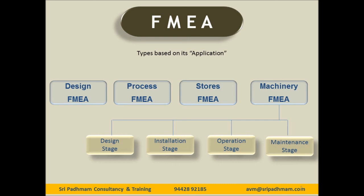So FMEA shall be applied into different stages: Design FMEA, Process FMEA, Stores FMEA, and Machinery FMEA — also known as Equipment FMEA — which is further driven into four different applications. This is a brief introduction about the technique called FMEA: Failure Mode and Effects Analysis. Thanks, bye bye.